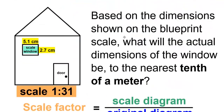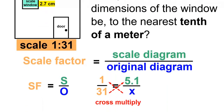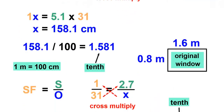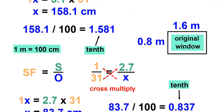Based on the dimensions shown in the blueprint scale, what will the actual dimensions of the window be to the nearest tenth of a meter? The dimensions of the window will be 1.6 meters by 0.8 meters.